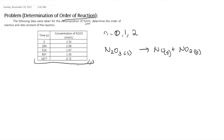For review, the rate equation is written as negative rA equal to k times CA raised to n, where n is our order of reaction.